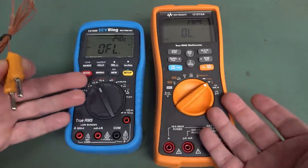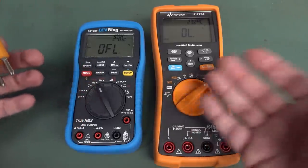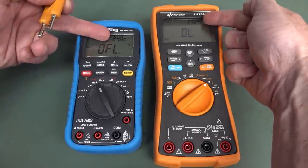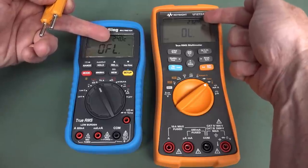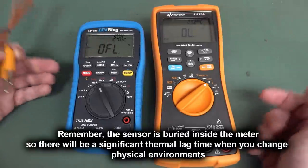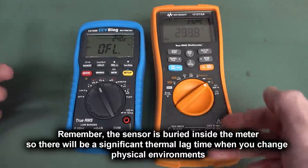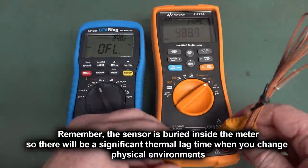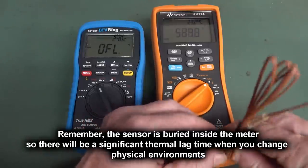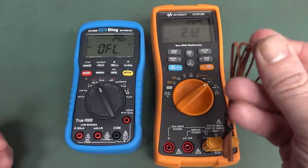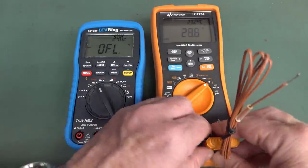Anyway, you might know that some more advanced multimeters like this 121 and this Keysight 1272A might actually have an internal temperature sensor that actually tells you what the internal temperature is of the multimeter. And of course, if you plug in your K-type thermocouple, then it measures the external temperature on the thermocouple. And of course, if I touch that, boom, it goes up like that.